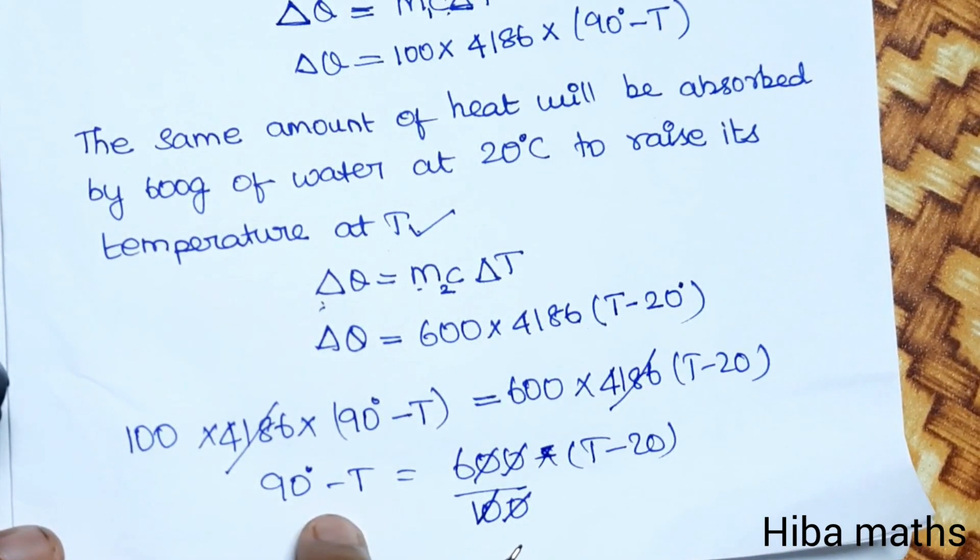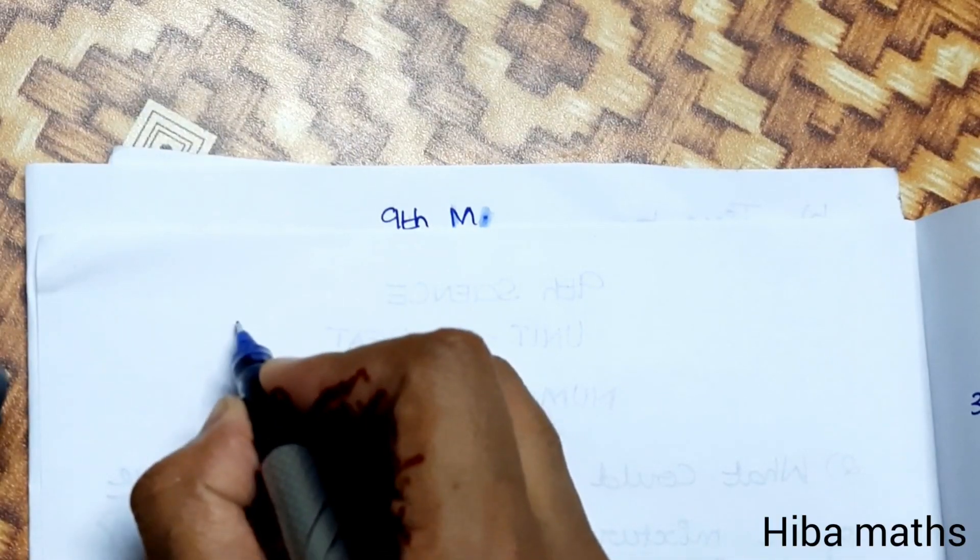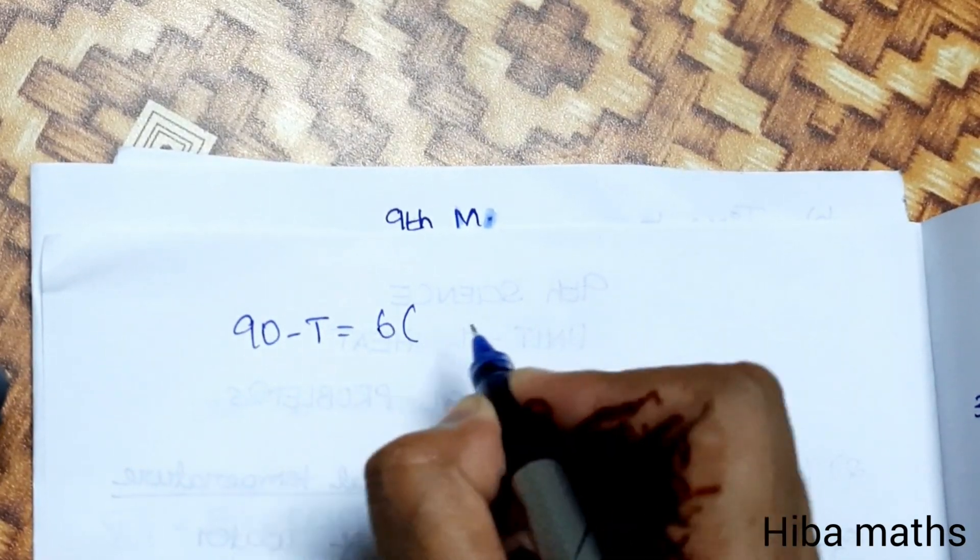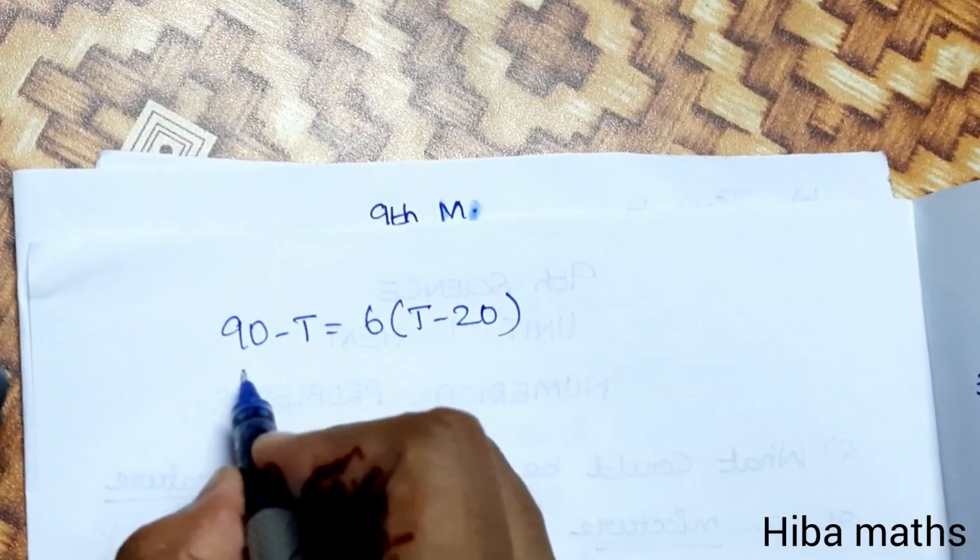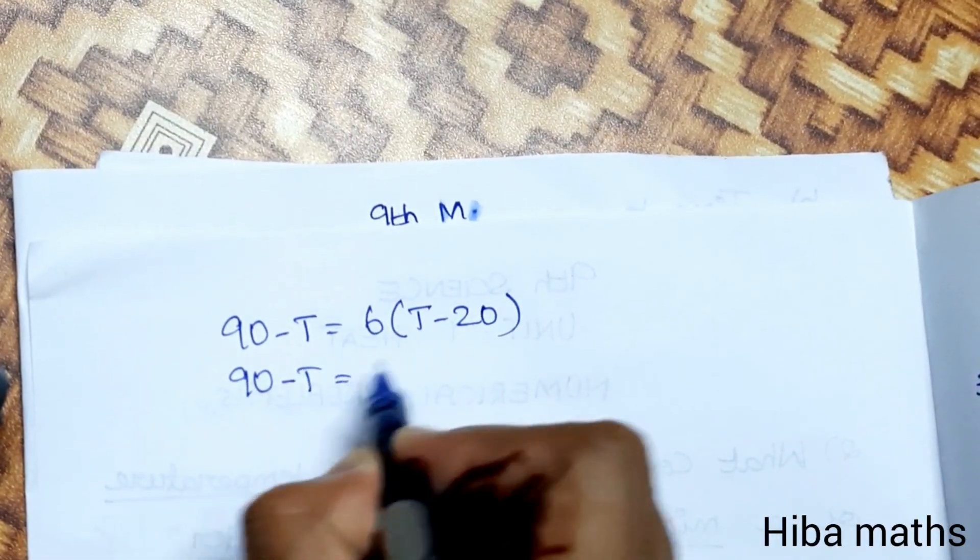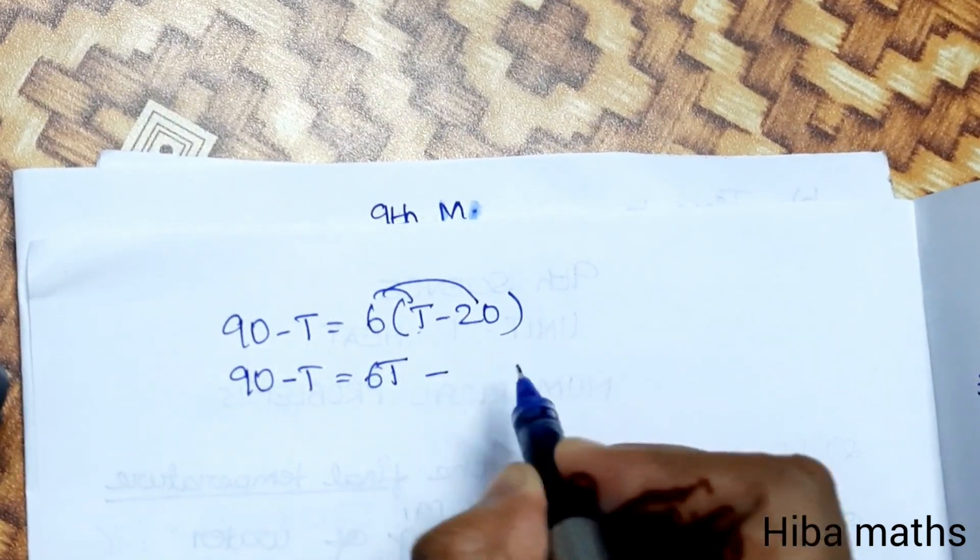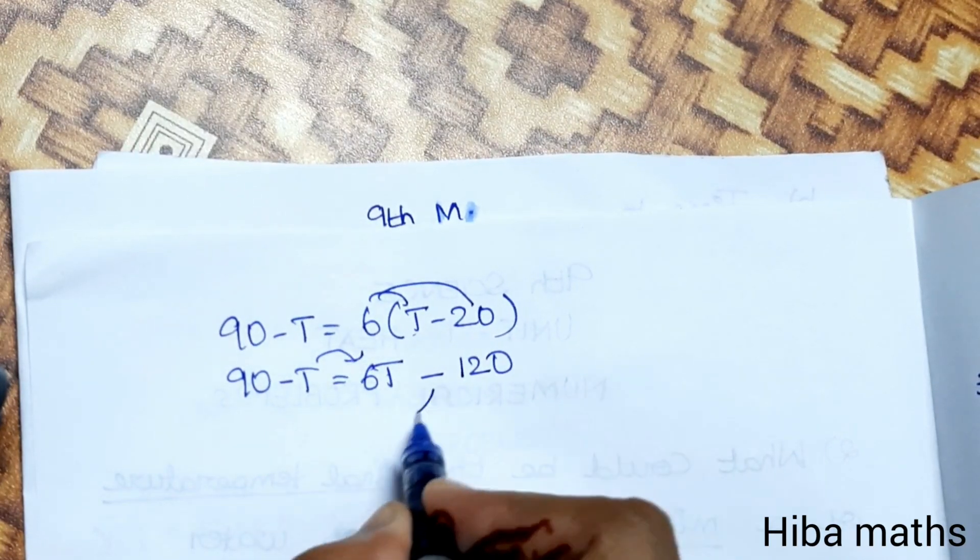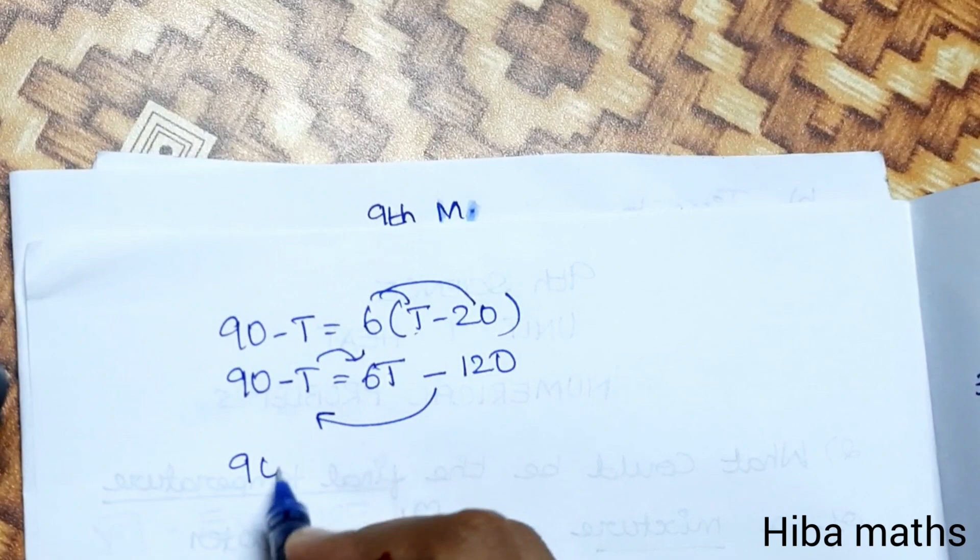Simplifying: 90 minus T equals 6 times T minus 120. When we multiply 6 inside the brackets, we get 6T minus 120.